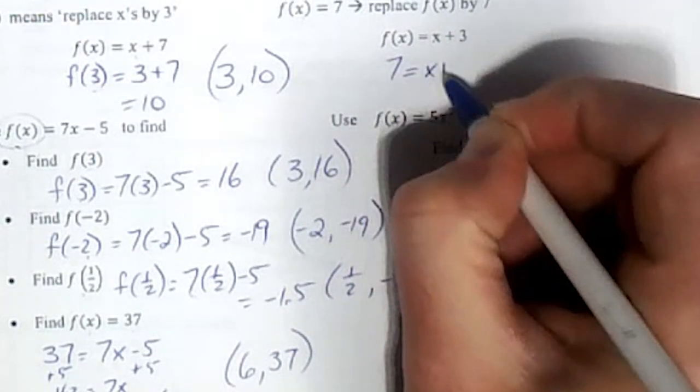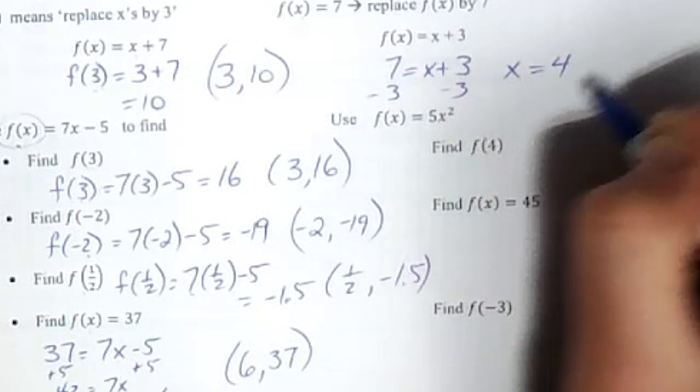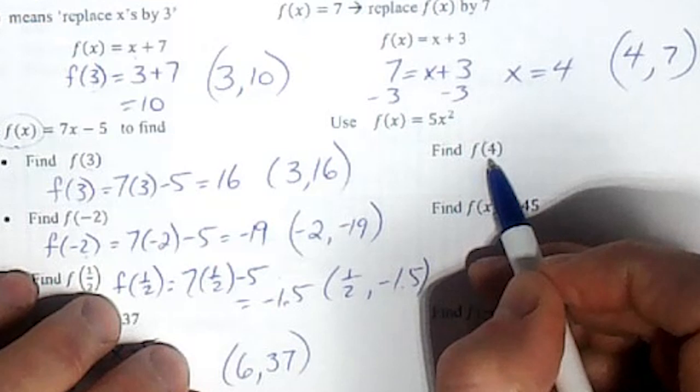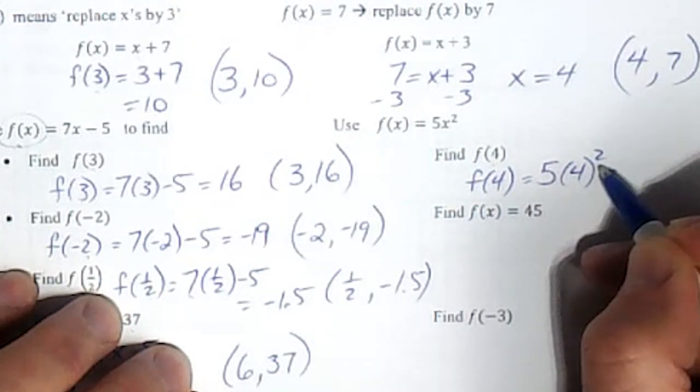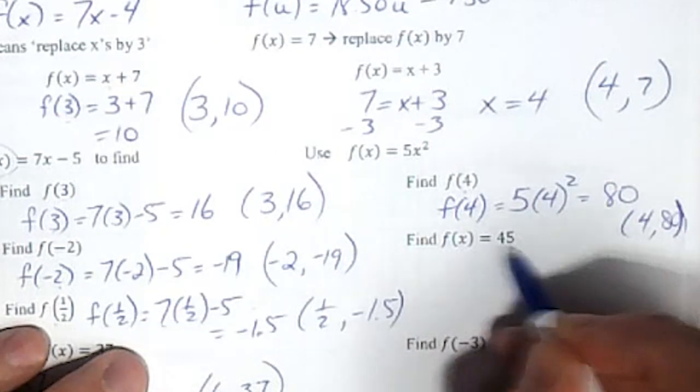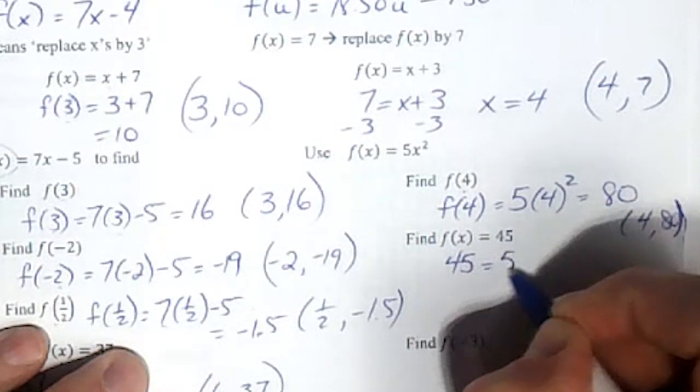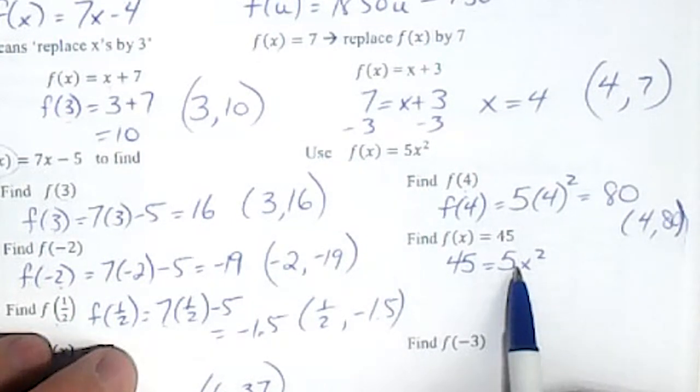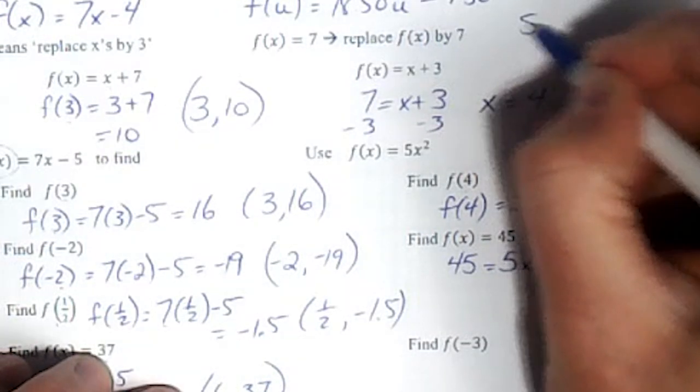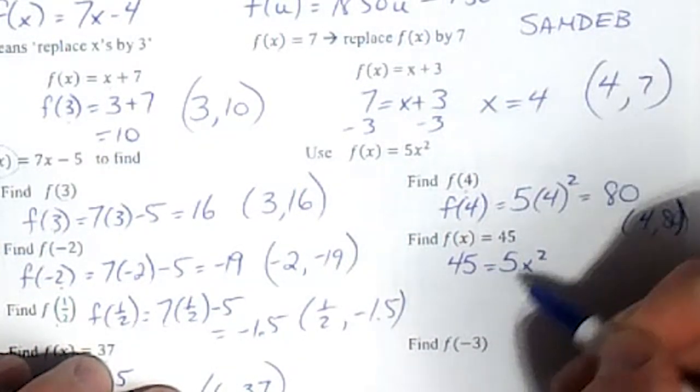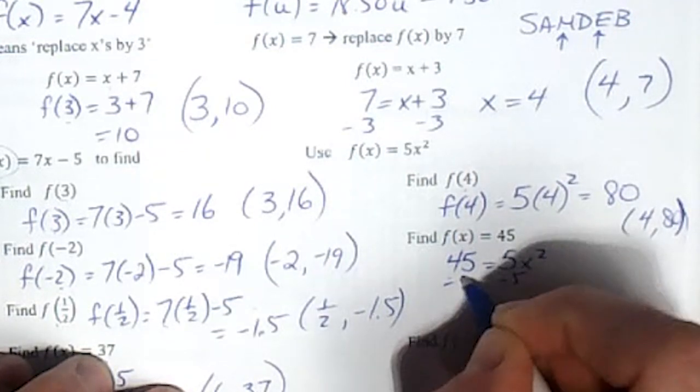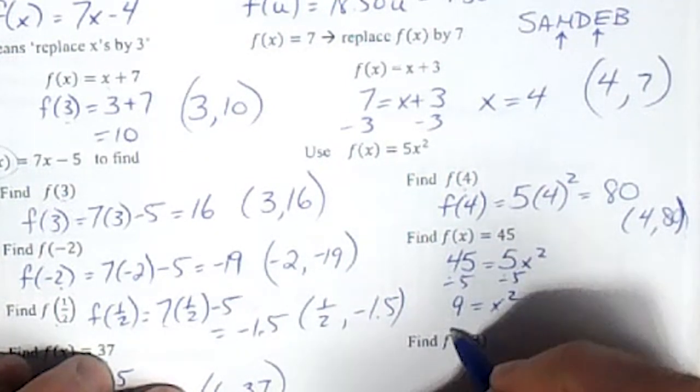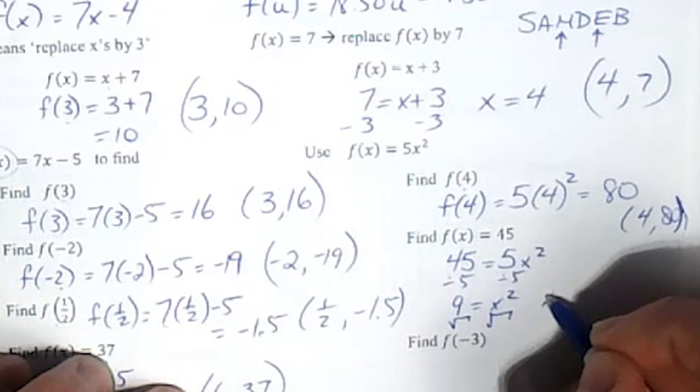Okay, so this one f of x equals 7, so this becomes 7 equals x plus 3, subtract 3, x equals 4, giving us the ordered pair (4, 7). This one f of 4 means x is 4, so f of 4 equals 5 times 4 squared equals 5 times 16 equals 80. Exponent first then multiply, giving us (4, 80). This one we have the answer, f of x equals 45. So we have to do algebra. We've got multiplication and exponent. We always follow order of operations. Divide by 5, we get 9 equals x squared. Then we have to square root, the opposite of a square, and we get x equals 3, so (3, 45).